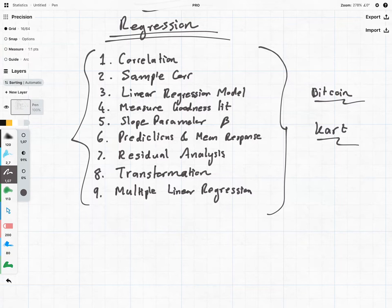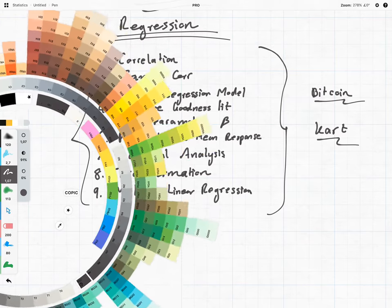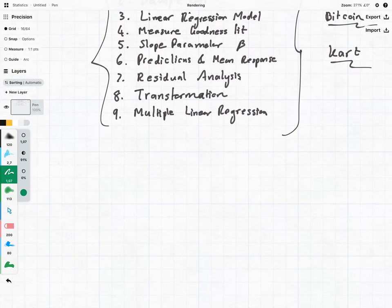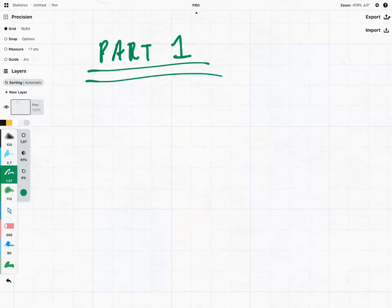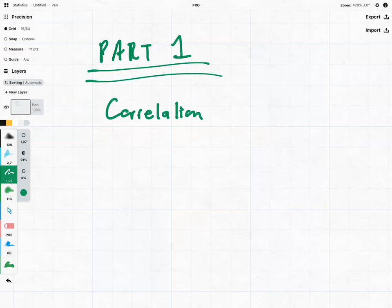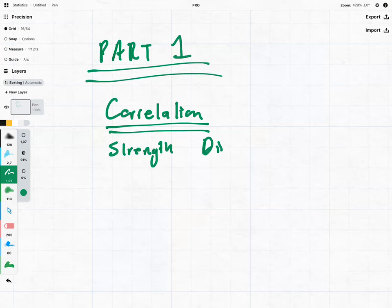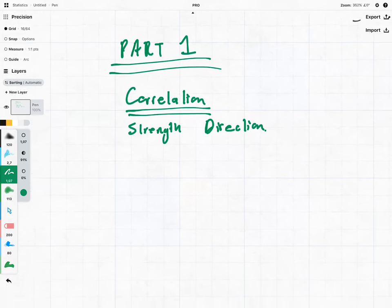But without further ado, let's jump on to part one. In part one we're going to be looking at this idea of correlation. What do we mean by correlation? Correlation essentially means the strength and direction of a relationship — so we're looking at the strength and direction of a relationship between two variables.